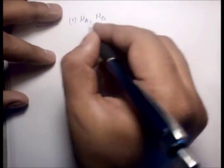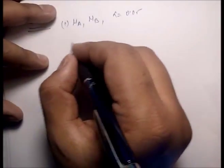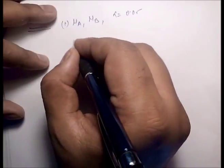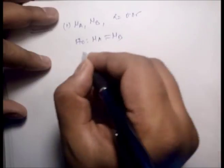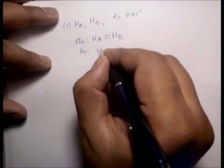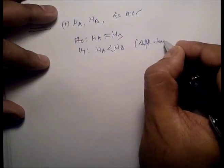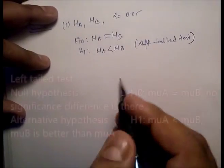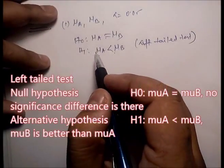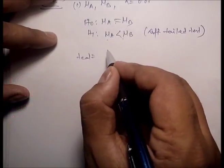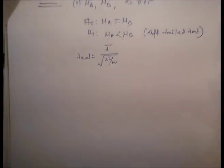We apply the paired t-test. The parameter of interest is the difference between mu_A and mu_B, with a significance level of 0.05. Null hypothesis: mu_A equals mu_B. Alternative hypothesis: mu_A less than mu_B. This means we apply a left-tail test to check whether food B is better than food A.